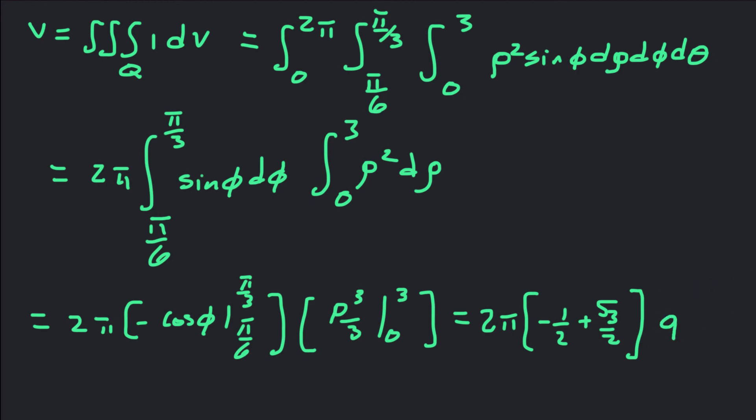We can cancel the 2 with these halves. The final answer is 9π(√3 - 1) units cubed. So that would be our volume.